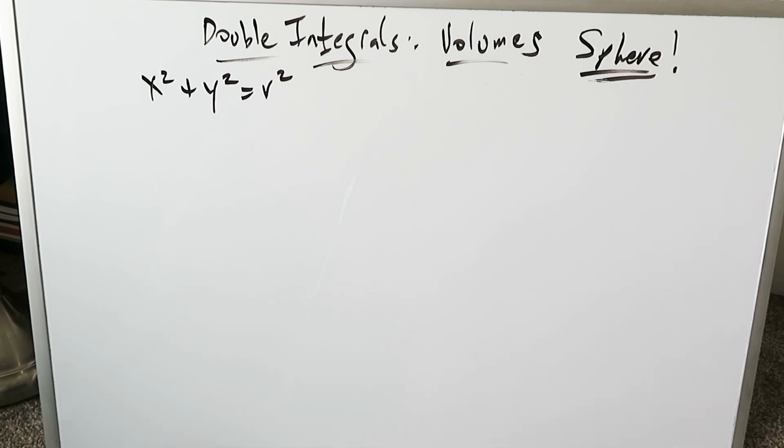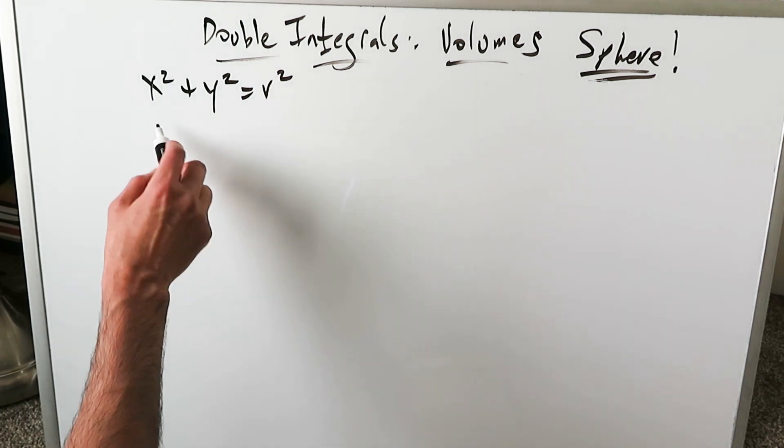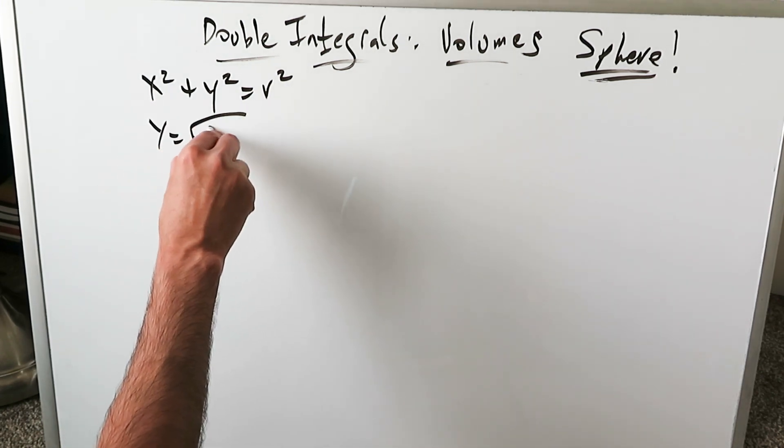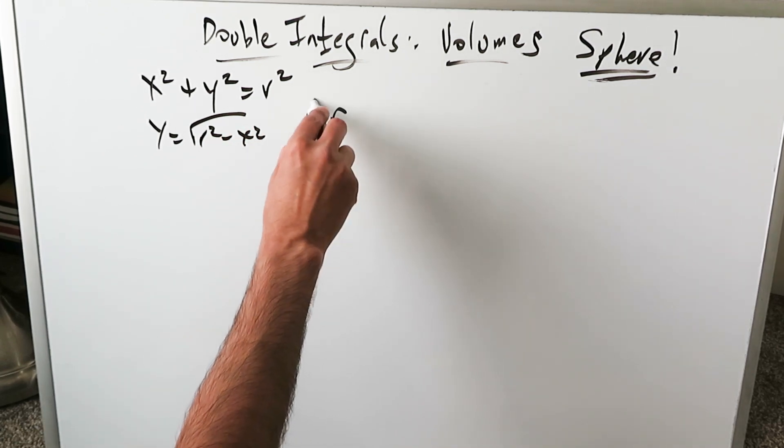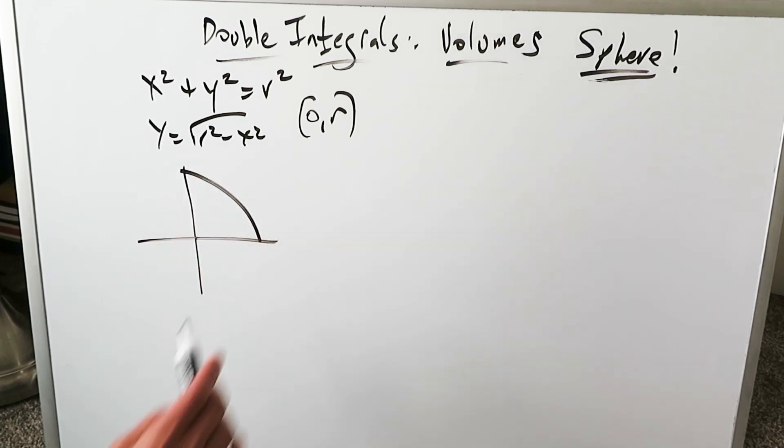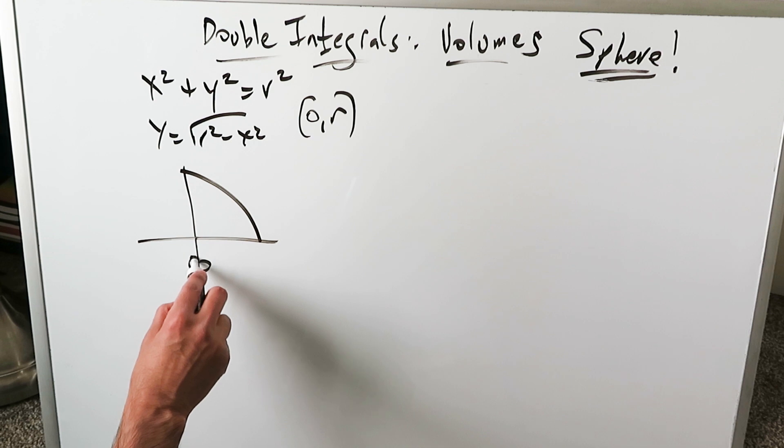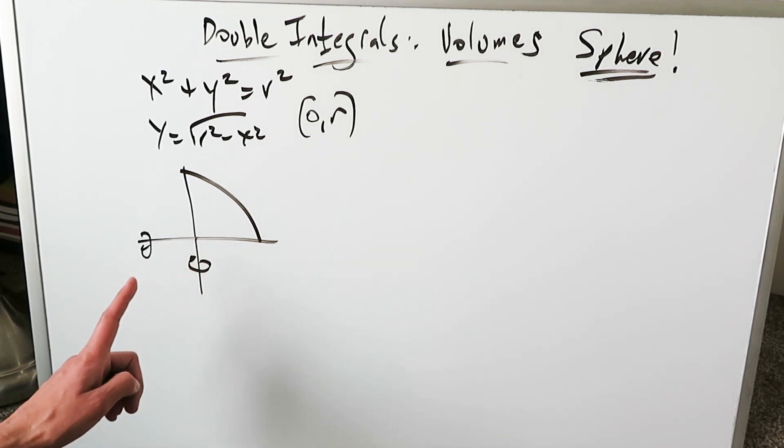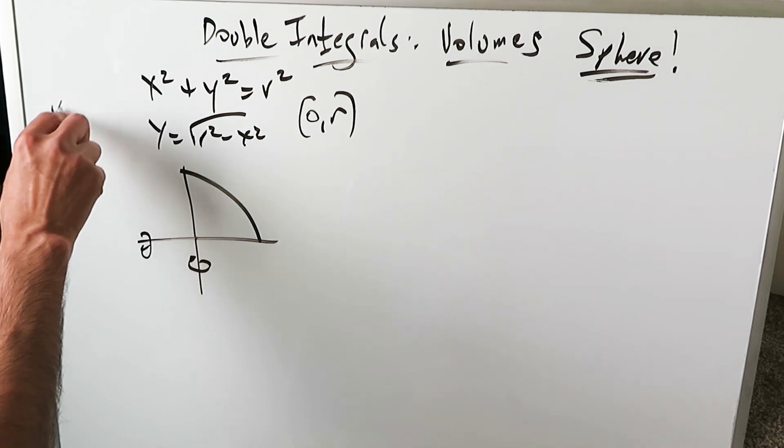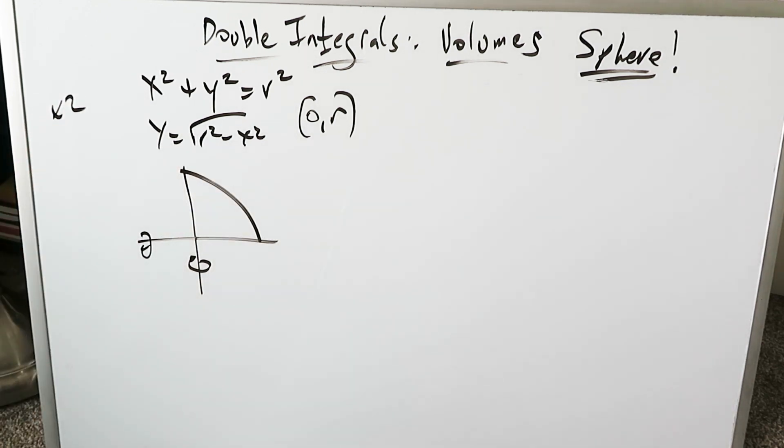x squared plus y squared equals r squared, a unit circle. If you solve for y, what do you get? Square root r squared minus x squared, but you limit its domain from 0 to r. What is your graph? It's this right over here. If you were to rotate this, whether around the y-axis or around the x-axis, you'll always get here a hemisphere, half of a sphere. You'll have to multiply by 2 to get your complete sphere.